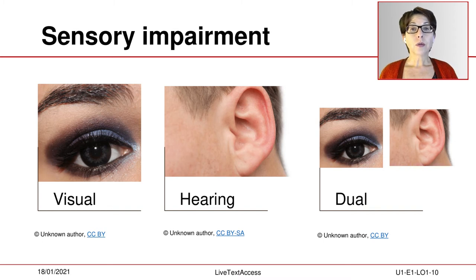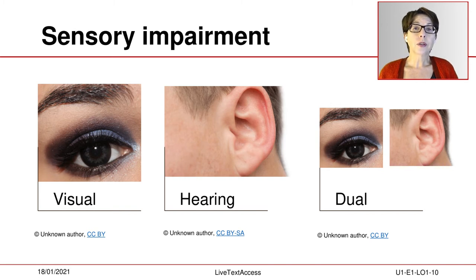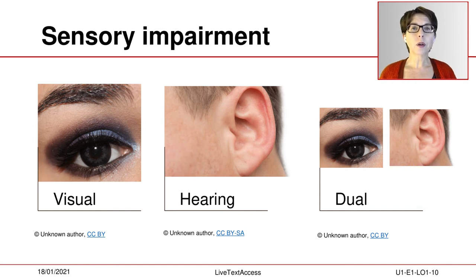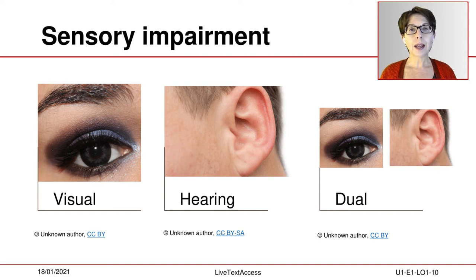Sensory disabilities are related to a loss or a full loss of a sense, be it sight, hearing, or both. When two senses are affected, we talk about dual sensory impairments — this is the case of the deaf-blind. The causes of a sensory impairment can be manifold. Some persons are born with the impairment, while others experience the loss later in life. This development has an impact on the communication method a person may prefer. For instance, persons born deaf or with profound hearing loss often consider sign language as their first language, compared to persons with a less severe hearing loss, who often prefer to communicate in standard language.